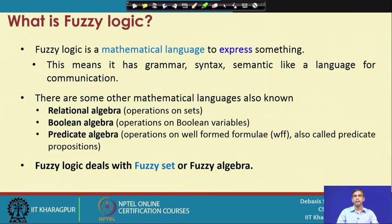Like fuzzy logic, there are many mathematical languages we know. One language is called relational algebra, which is based on operations on sets — it is also called relational logic. Boolean logic is basically based on operations on Boolean variables, also called Boolean algebra or predicate logic, which is based on well-formed formulas or propositions, also called predicate propositions. Fuzzy logic, like relational logic, Boolean logic and predicate logic, also deals with some elements.